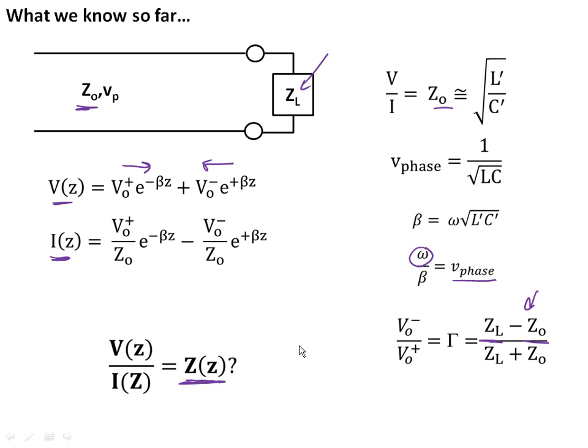Well, the answer would seem to be no, because we're defining the impedance of the line by Z-naught, what we call the characteristic impedance. So what's going on here? And in fact, it's true that the voltage and current do vary along the line. They vary as these standing waves.